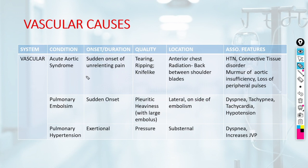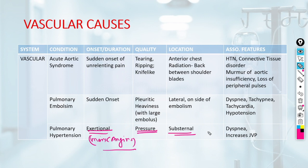Pulmonary hypertension causes exertional chest pain that can mimic angina. The pain is due to right ventricular myocardial ischemia that increases on exertion. The quality is a pressure sensation, typically substernal, associated with dyspnea and increased JVP due to heart failure.